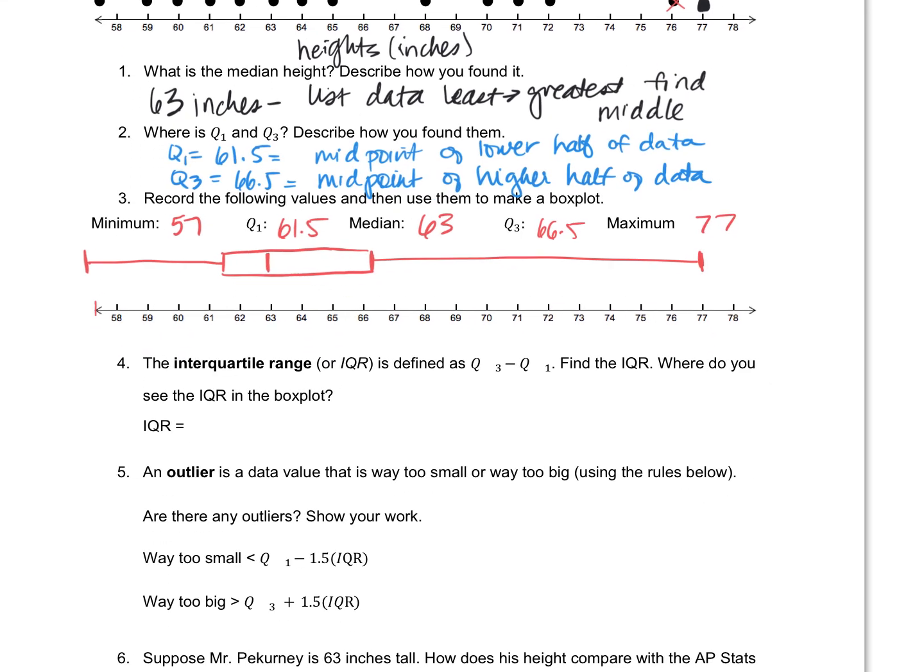Now interquartile range, also known as the IQR, is just the Q3 value minus the Q1 value. So where do you see IQR in the box plot? Where is that depicted? What part of the box plot is made up of Q1 and Q3? The box. The whole box is Q1 and Q3, right? That is the interquartile range. So let's figure this out. Q3 minus Q1. Numerically, we would do 66 and a half minus 61 and a half, which gives you what? Five. So the interquartile range is five.